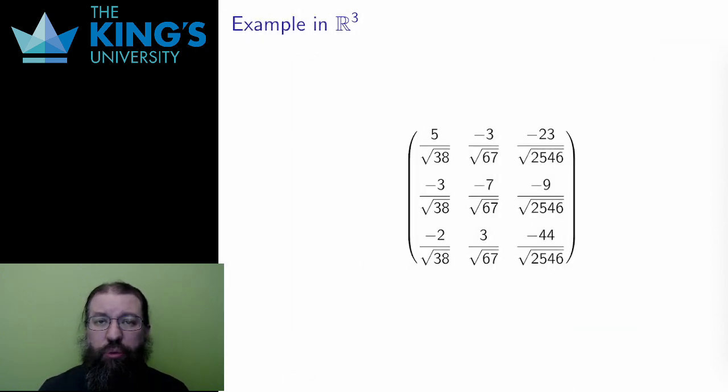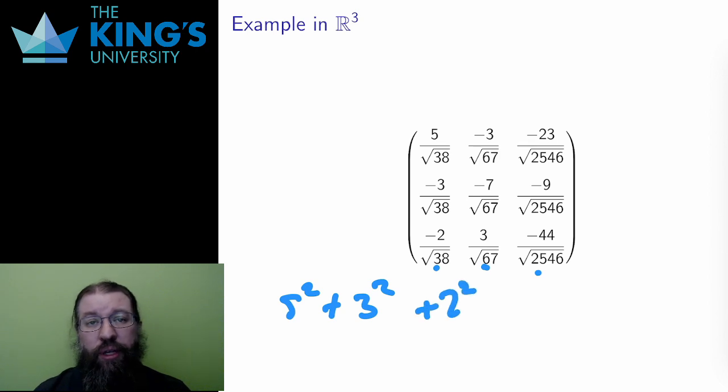Usually, the matrices are a bit more complicated. This is also an orthogonal matrix. I can calculate that all the columns have length 1. Indeed, that's what the strange denominators are all about. The length of the first column is 5² + 3² + 2² over 38, but that numerator is 25 + 9 + 4, which is 38, and 38 over 38 is 1. And the same for the other columns. If you square all the terms and add them up, you get 1.